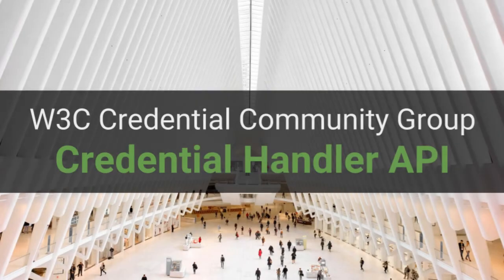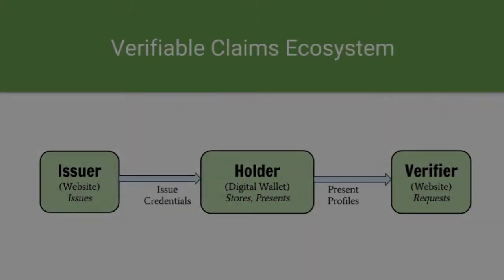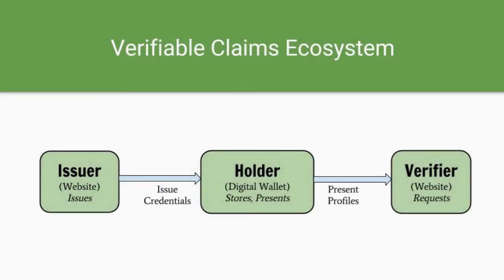This video demonstrates the Credential Handler API, which provides a new way for browsers to send and receive digitally verifiable credentials via the web. This work is part of a larger initiative at the World Wide Web Consortium to standardize verifiable claims, such as digital identity cards, professional licenses, and education credentials. The verifiable claims ecosystem contains three basic types of entities.